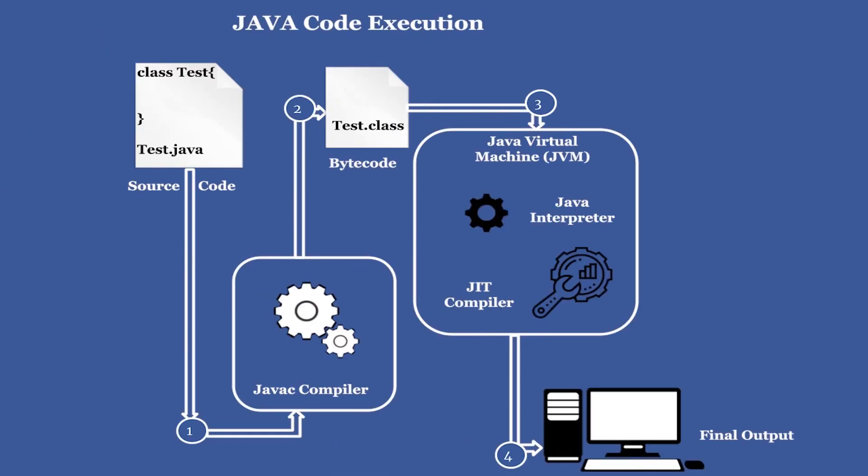Now let's see all the steps involved in the execution of Java code. Initially we have source code, which is given to the Java compiler (javac) that converts it to bytecode. This bytecode is an intermediate representation, which is further given to the Java Virtual Machine. The JVM has a Java interpreter that interprets the bytecode to produce the final output, and also a JIT (Just In Time) compiler that optimizes the bytecode to machine code.